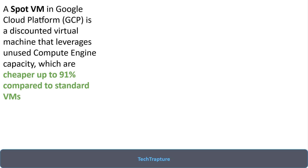Let's take an example. If you are paying $100 per month for your standard VM, the cost for a Spot VM can be $10 per month. The pricing varies but is almost 60 to 90% cheaper than your standard VM. Why are these cheaper? Because they leverage unused compute capacity.